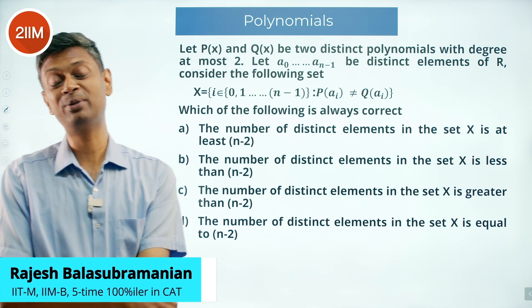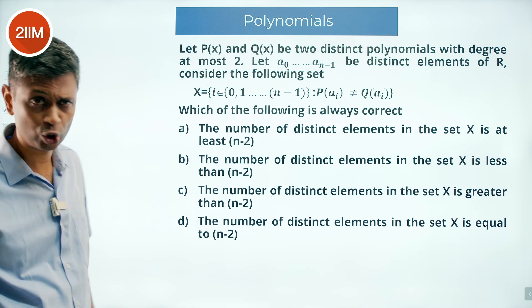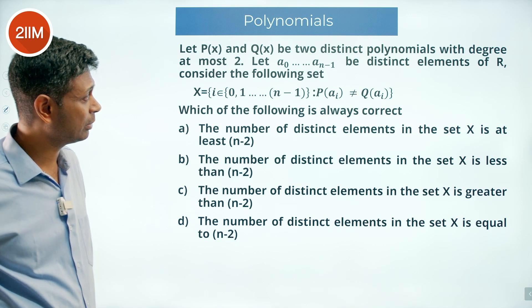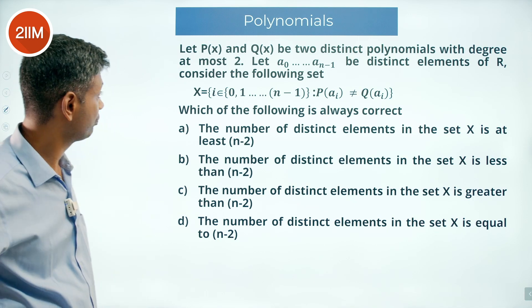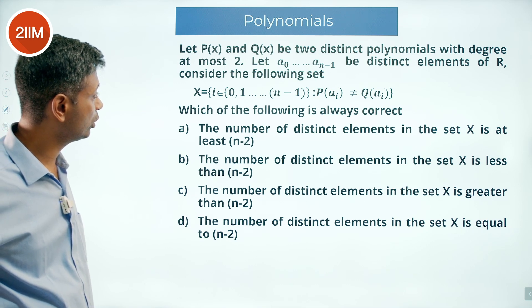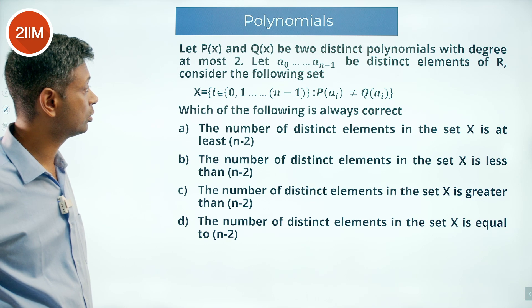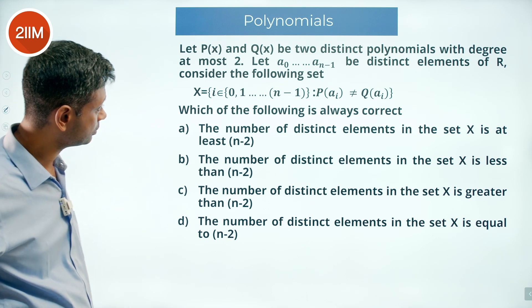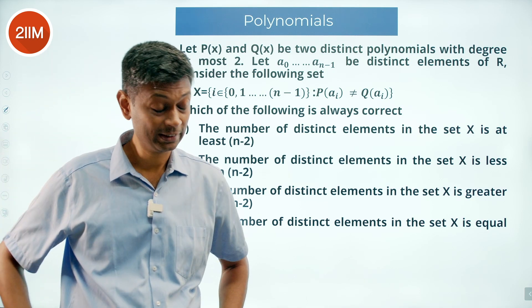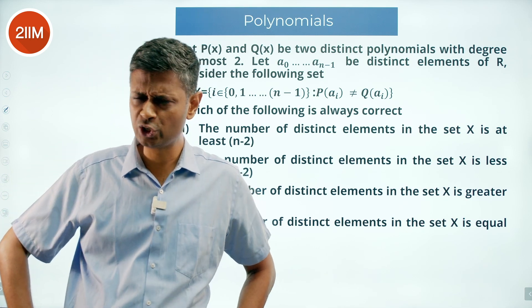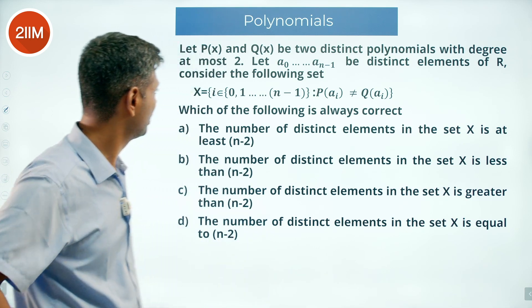I'm smiling because this is a fabulous question. Let P(x) and Q(x) be two distinct polynomials with degree at most two. Let a₀, a₁, a₂, ..., aₙ₋₁ be distinct elements of the real numbers. It took me a long time to wrap my head around this question — a beautiful, delightful question.